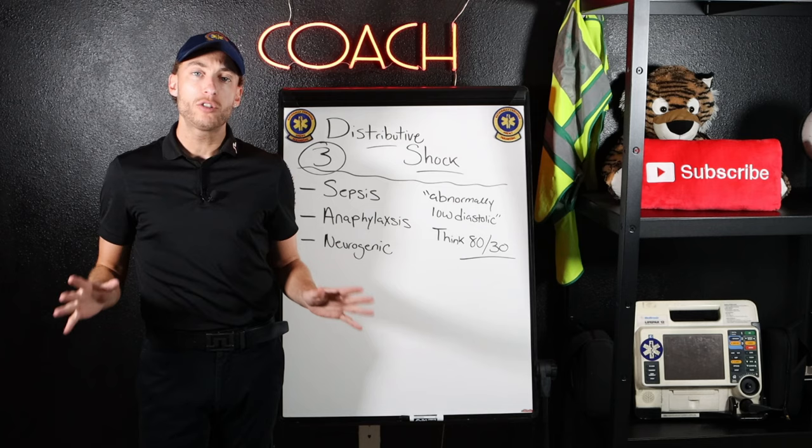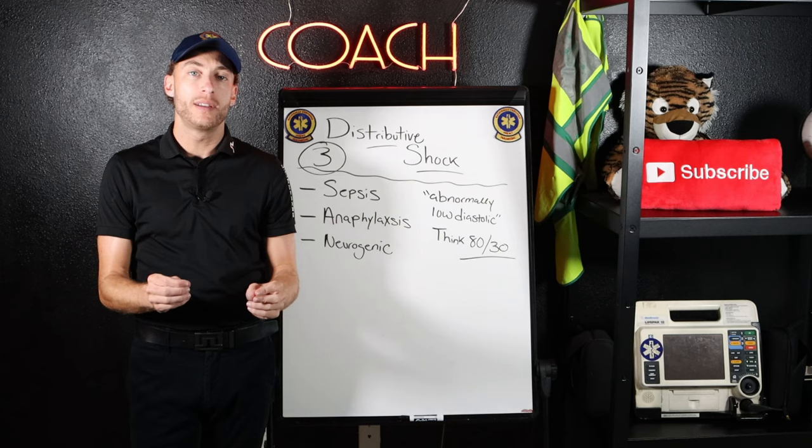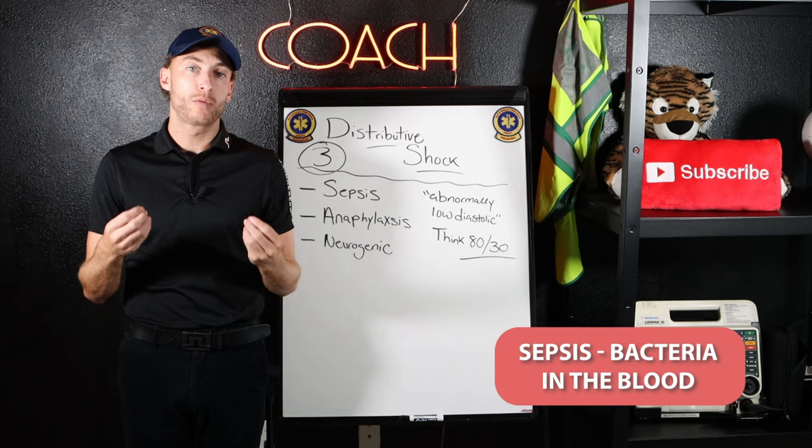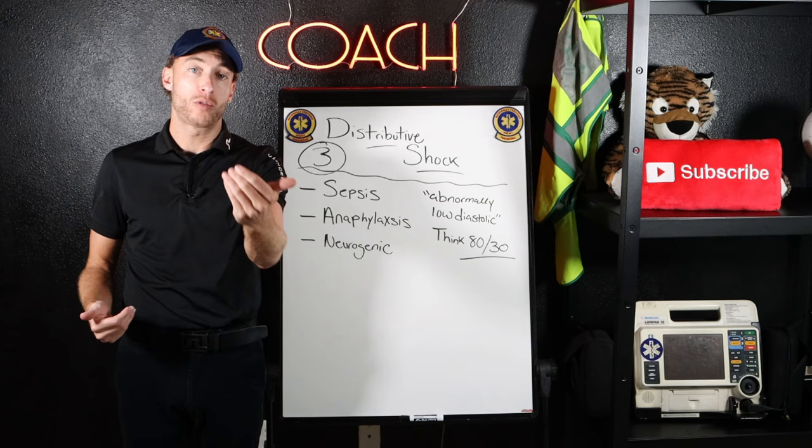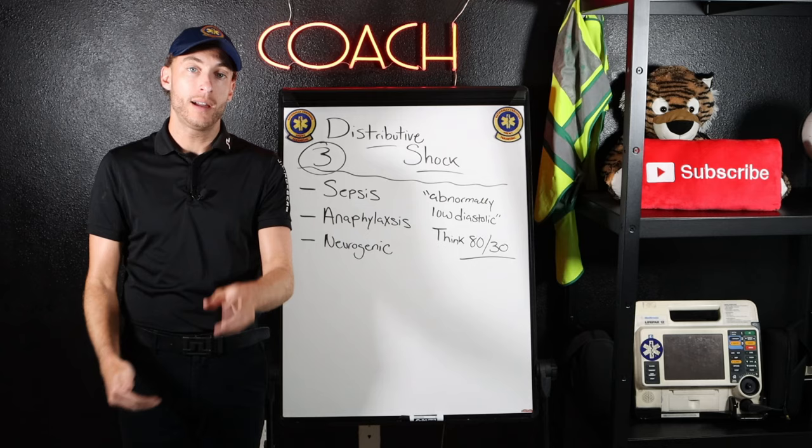First subtype: sepsis. Sepsis is very simply bacteria in the blood. Very common routes would be the lungs — like pneumonia — and also UTIs, urinary tract infections. Those are probably the most common sources of sepsis.